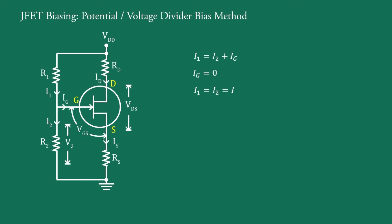Therefore, we can write VDD equal to I into R1 plus R2, and therefore I equal to VDD upon R1 plus R2.